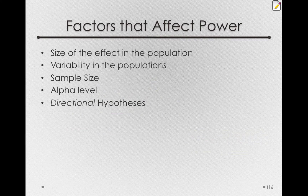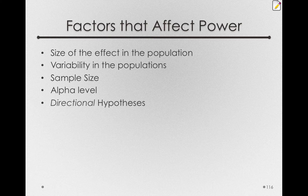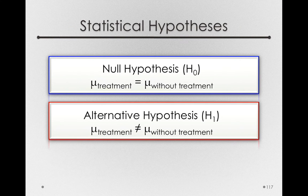Now one final way to change power is using what are called directional hypotheses. This will have an effect very similar to changing our alpha level, but will do so in such a way to not affect our false alarm rate. So going back to the statistical hypotheses I showed you before, these are what are known as non-directional statistical hypotheses.